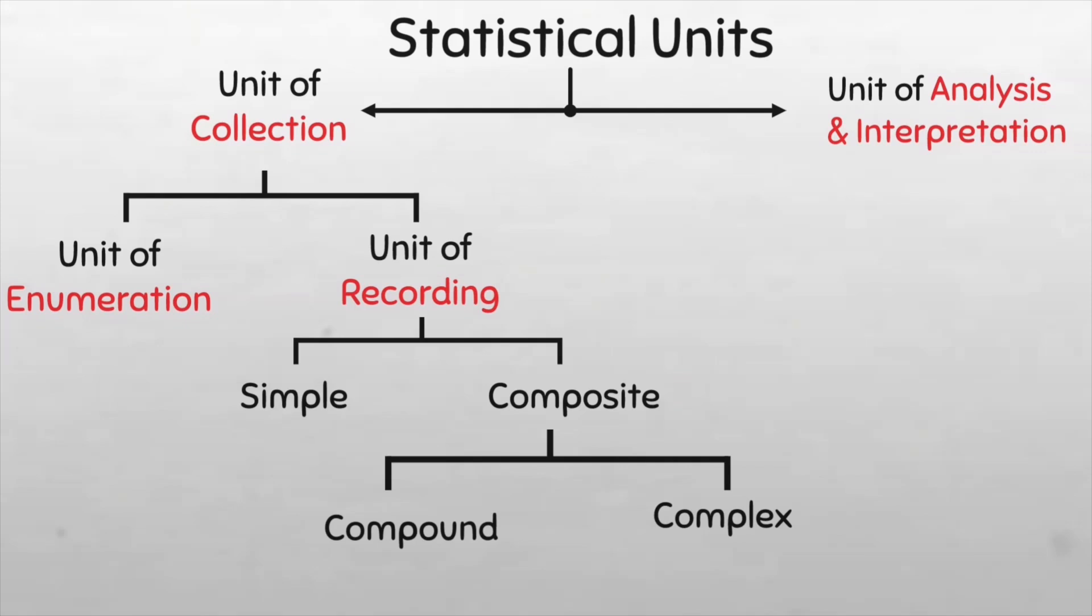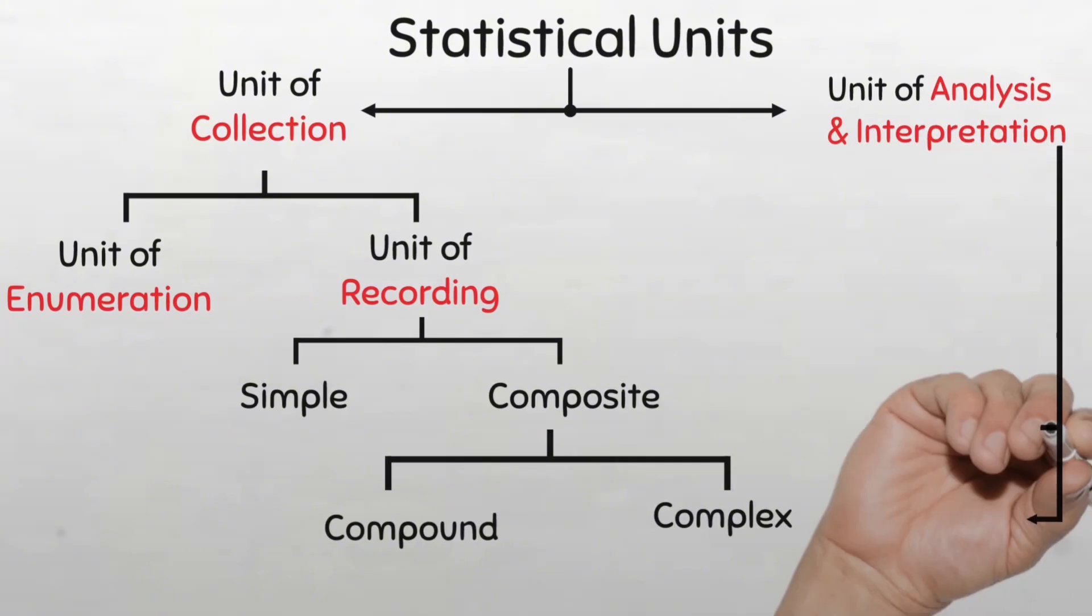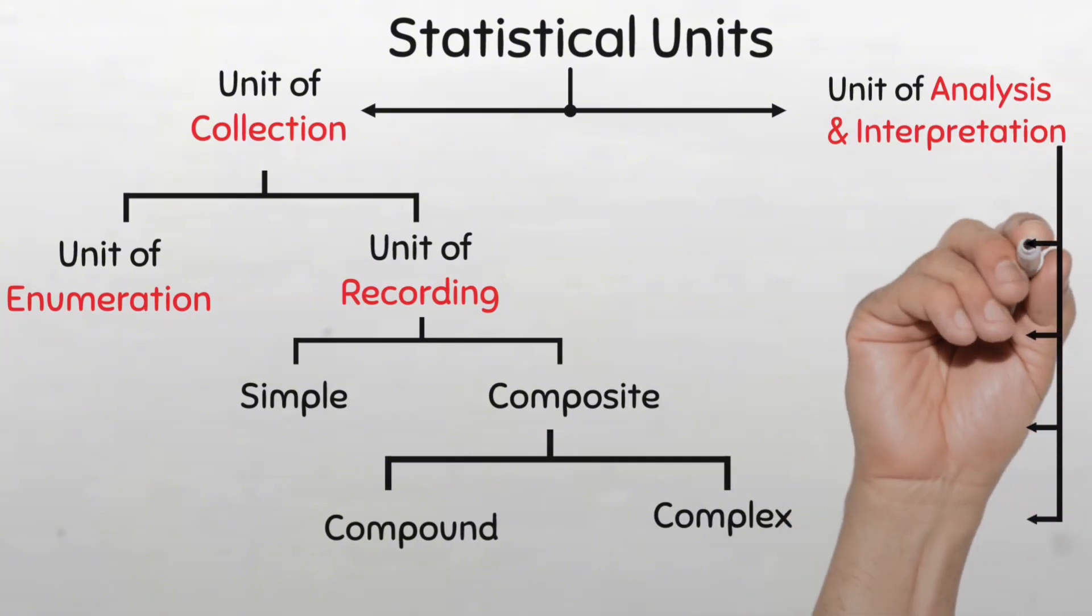On the other hand, we have the unit of analysis and interpretation. This refers to the primary unit that is being analyzed and interpreted in a study. Here, we can have rates, ratios, percentages and coefficients. And all these are often used to interpret data.